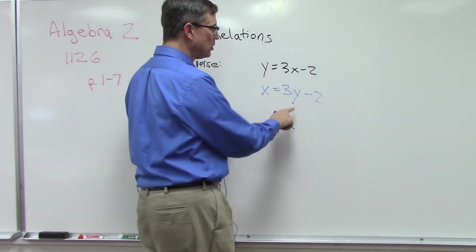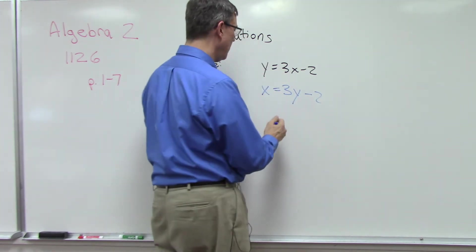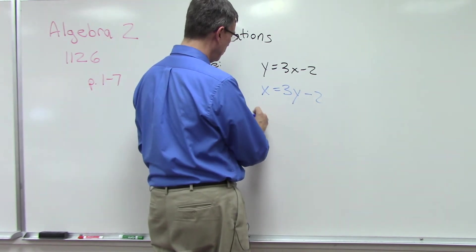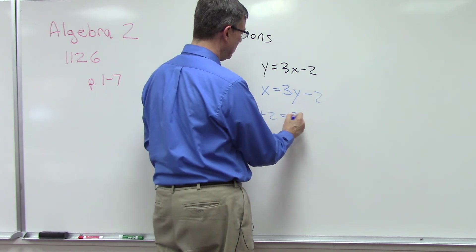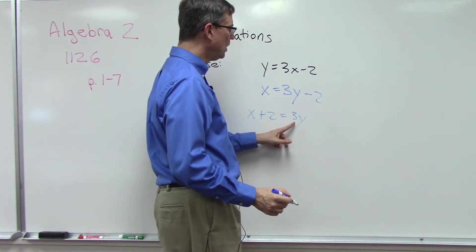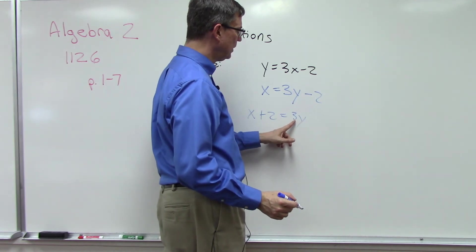Everything else stays the same; we just switch the x and the y. Then we're going to solve for y again. I'm going to bring the 2 over here: x plus 2 equals 3y.